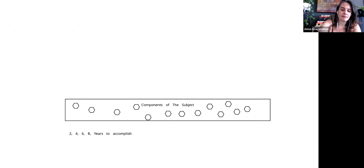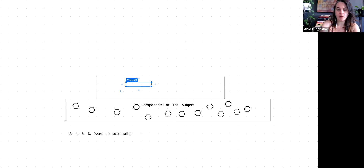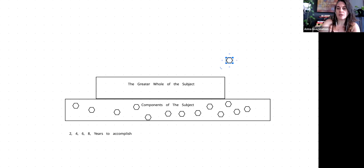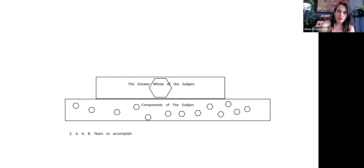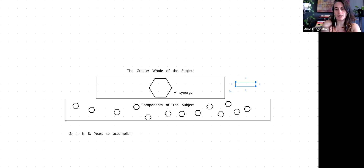However, there is a second thing happening here that most people don't know. Philosophers have figured this out, which is why they are philosophers. There is another subject called the integrated whole, or the greater whole of the subject. The greater whole consists of literally all of these things, but this massive thing is actually just this. It's equal to all the combined integrated components plus synergy — a sum greater than its parts — because when you put them together, they work more efficiently. Studying the integrated whole takes approximately two months to two years max.